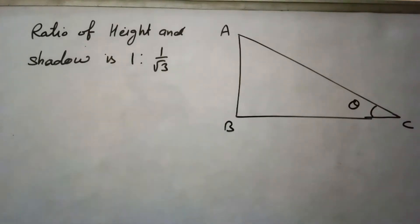Here in this question, it is given that the ratio of height and shadow of a vertical tower. Let this AB be the vertical tower and C up to point C, it is a shadow. Ratio of height and shadow is 1 to 1 upon root 3. We need to find the angle of elevation of the sun.